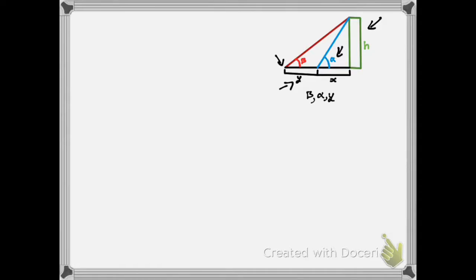To do this, my initial thoughts were to form two equations using the tangent ratios: first, using x and the angle alpha with the tangent function, and then using the length x plus y and the angle beta. Because, of course, if this is a tower, towers go straight up, so that's going to be a right angle right there.